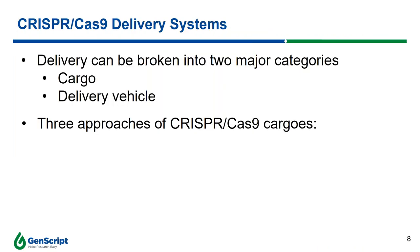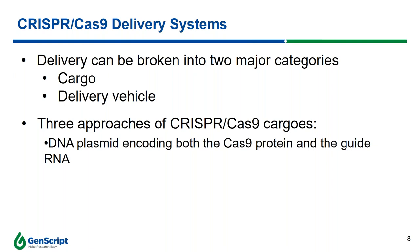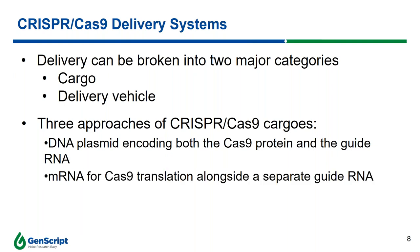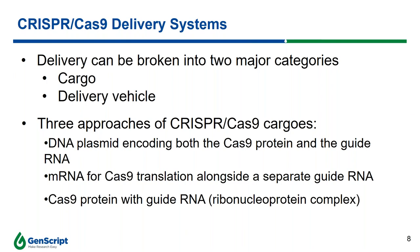Now I'd like to discuss CRISPR delivery systems from two perspectives: the cargo and the delivery vehicles. There are three different CRISPR cargo approaches: first, using a DNA plasmid to encode the Cas9 protein and guide RNA; second, using mRNA for Cas9 translation alongside a separate guide RNA in dual oligo format (crRNA and tracer RNA separately); and third, using a Cas9 protein with a guide RNA — known as a ribonucleoprotein (RNP) complex. I'll discuss the RNP system in more detail later.